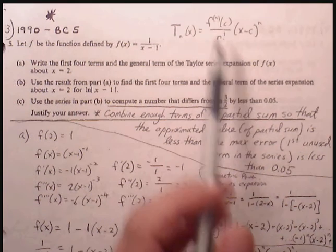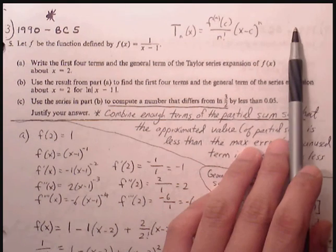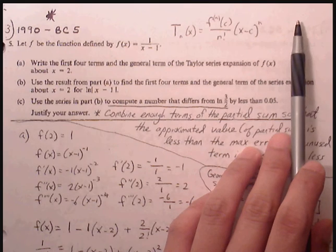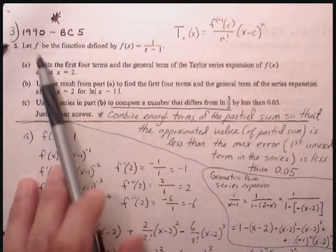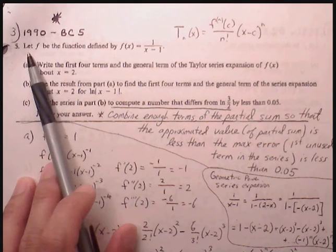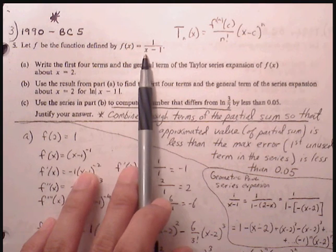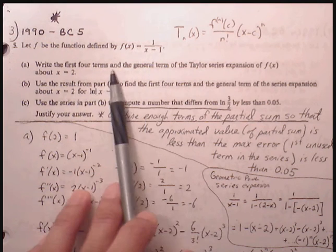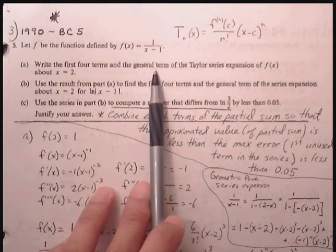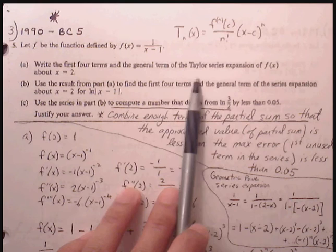We're working through the rest of the FRQs for Taylor polynomials. This is number 3. Let f be the function defined by f(x) = 1/(x-1). Write the first four terms and the general term of the Taylor series expansion of f(x) about x equals 2.